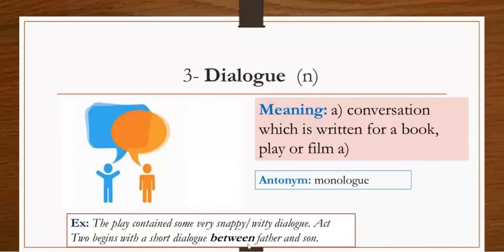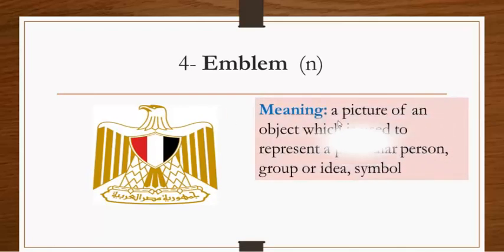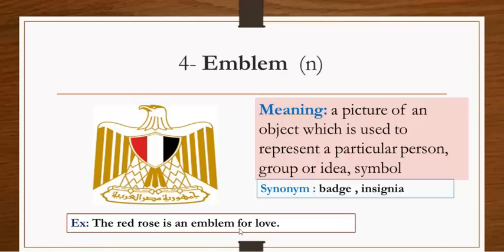This is very famous for Egyptians and this is the symbol on the flag for the Egyptians. This is called emblem, or a symbol, meaning a picture of an object which is used to represent a particular person, group, or idea. Synonym: badge or insignia. Example: A rose is an emblem for love. That's a clear symbol or emblem.